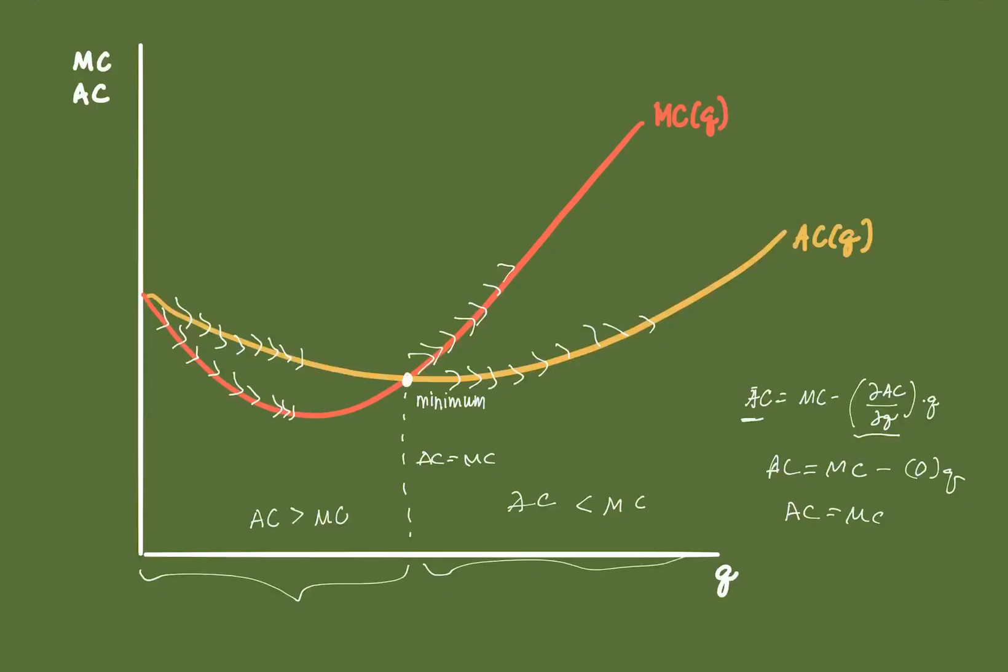So again, that's a sort of explanation of a cubic production function and a cubic cost function and how variable returns to scale tend to behave as represented in these graphs.